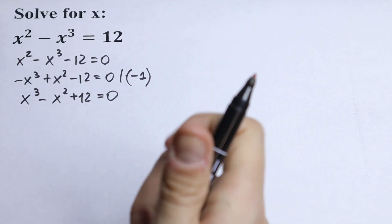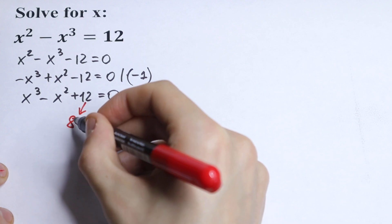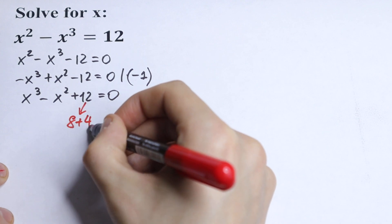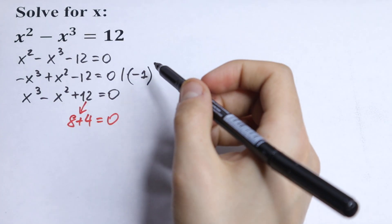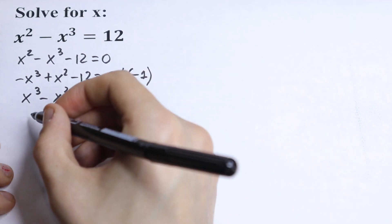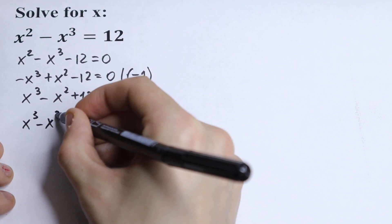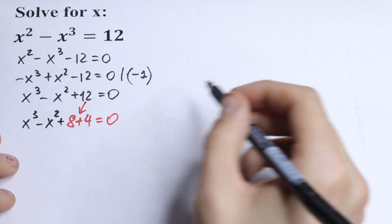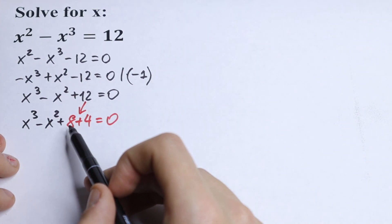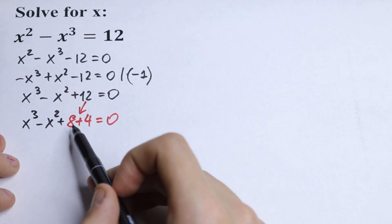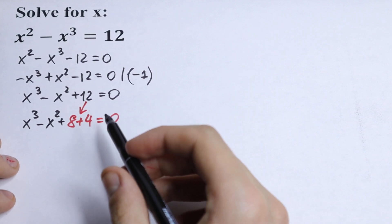So let's write this 12 as 8 plus 4, equal to 0. And this x cubed minus x squared — so what are we going to do next? Of course, this 8 can be written as 2 cubed and this 4 can be written as 2 squared.